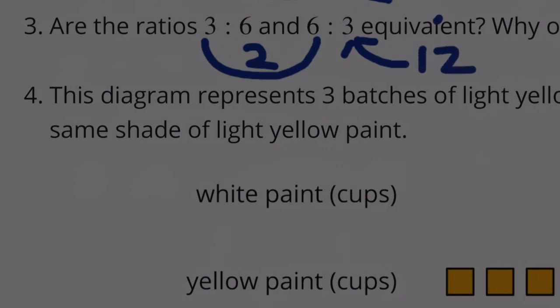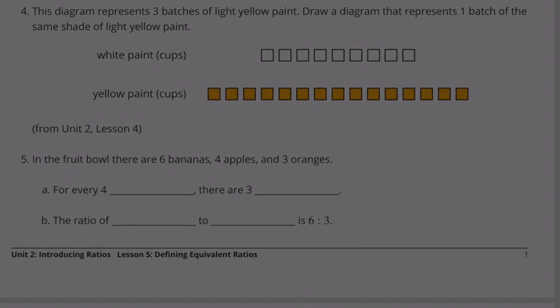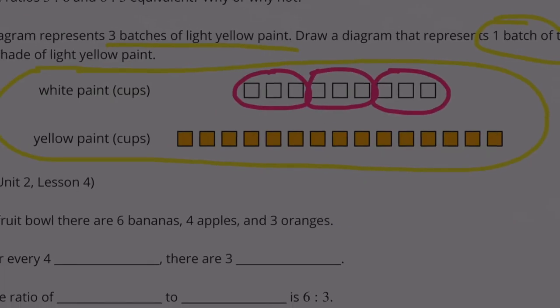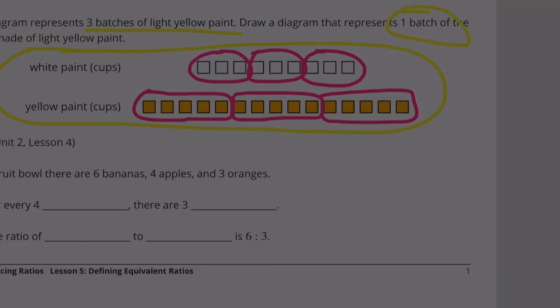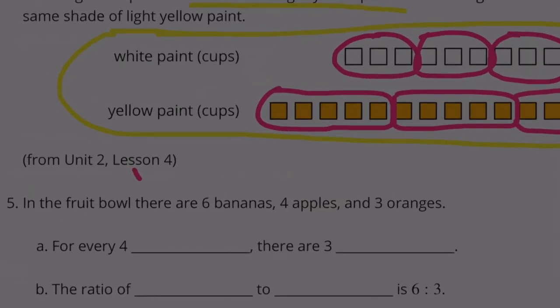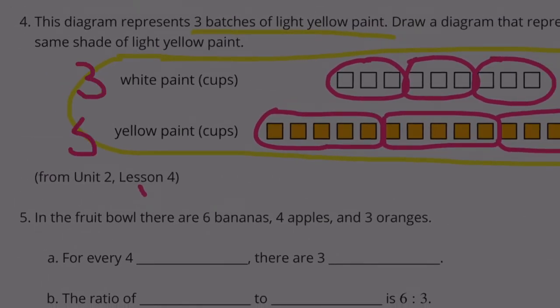Number 4: This diagram represents 3 batches of light yellow paint. Draw a diagram that represents 1 batch of the same shade of light yellow paint. So all of this represents 3 batches. So if we divide this by 3, it would become 1 batch. There were 9 cups of white paint. There are 15 cups of yellow paint. So 1 batch would be 3 cups of white paint and 5 cups of yellow paint.